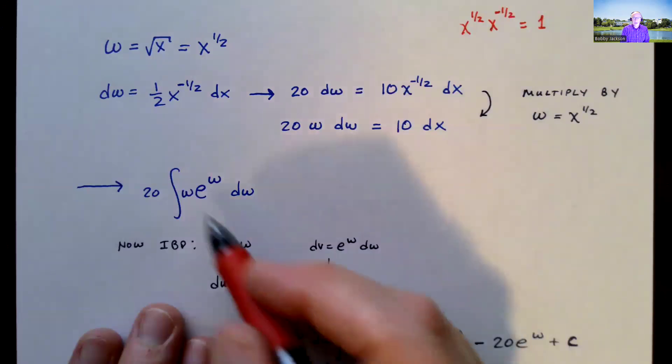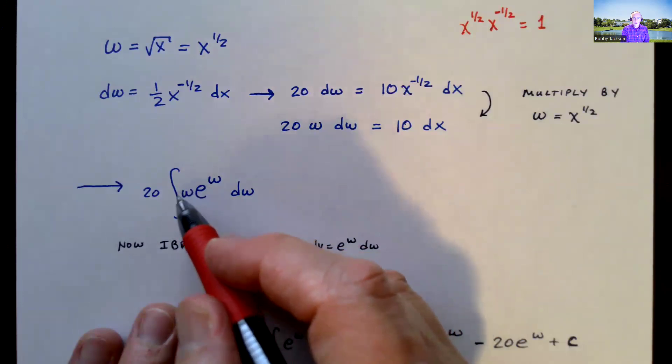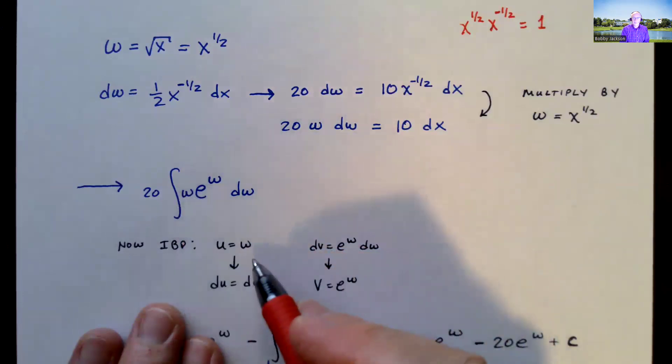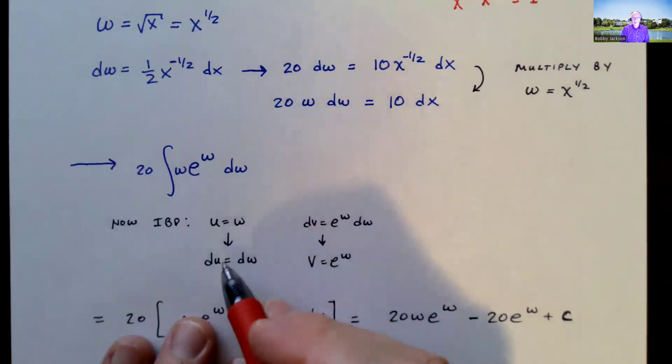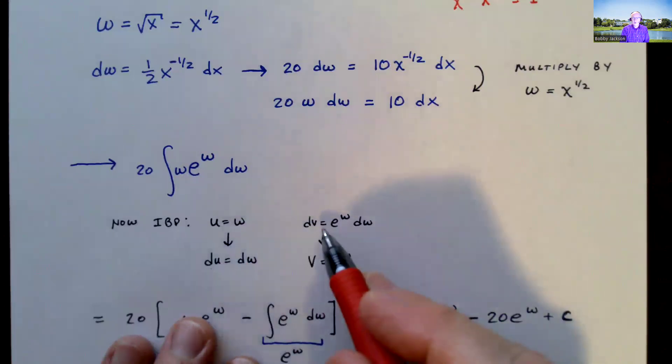I'm going to let u be the algebraic term, right, w. There's no log, no inverse trig. So I will choose the algebraic part. The dv is e to the w. Here I differentiate. So du is dw. Here I integrate. So v is e to the w.